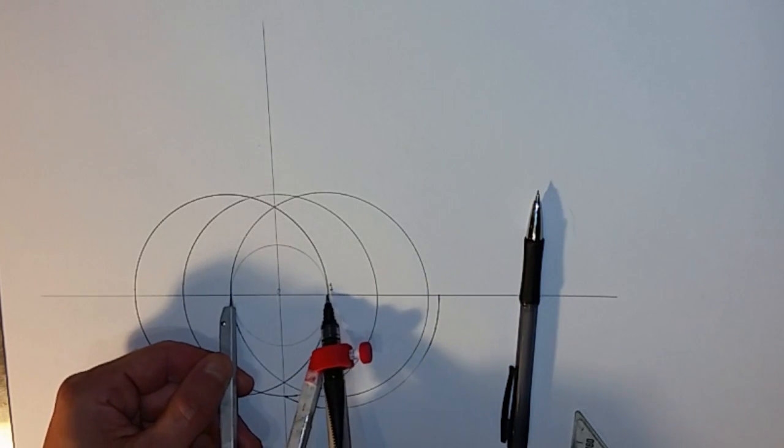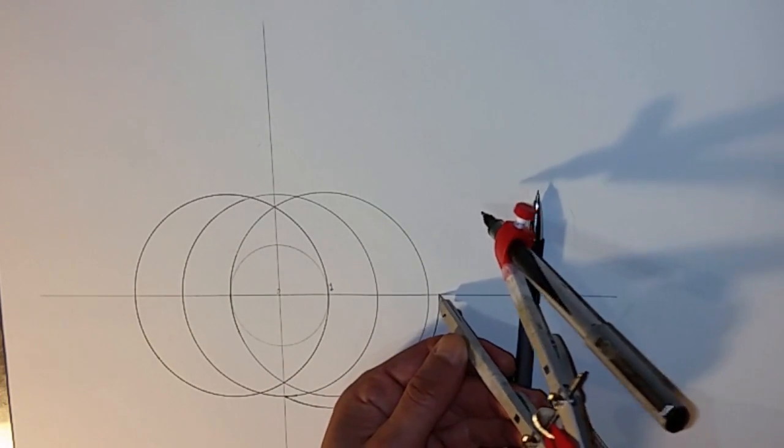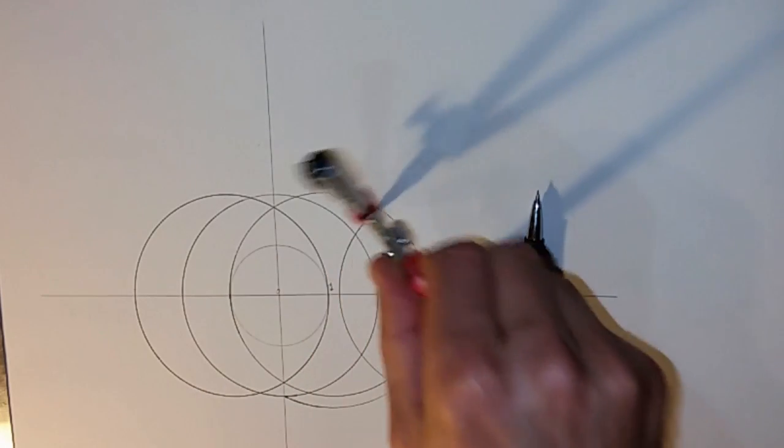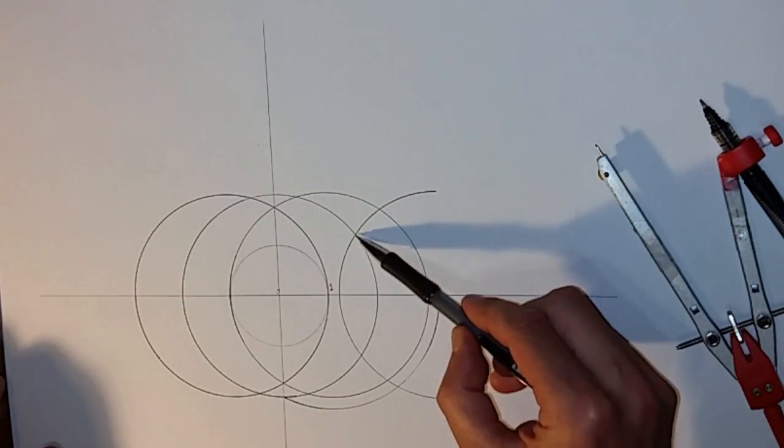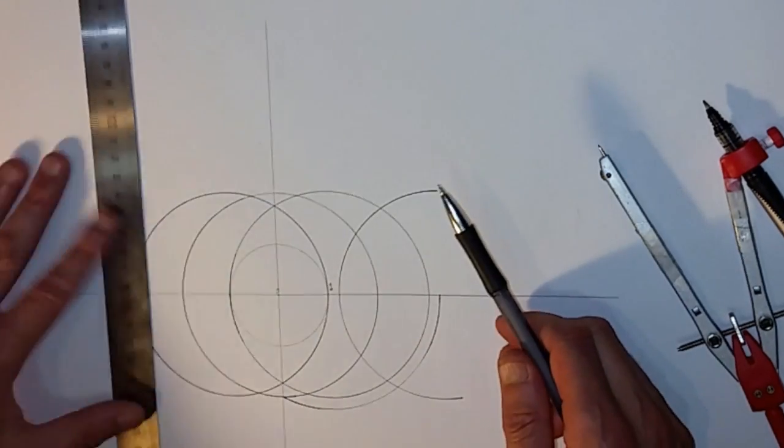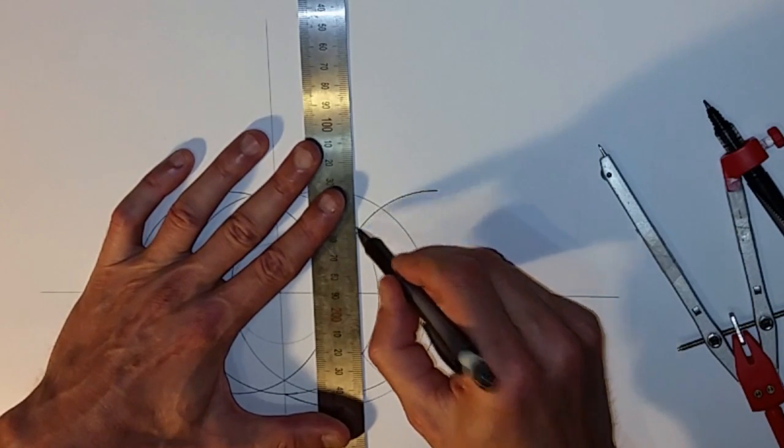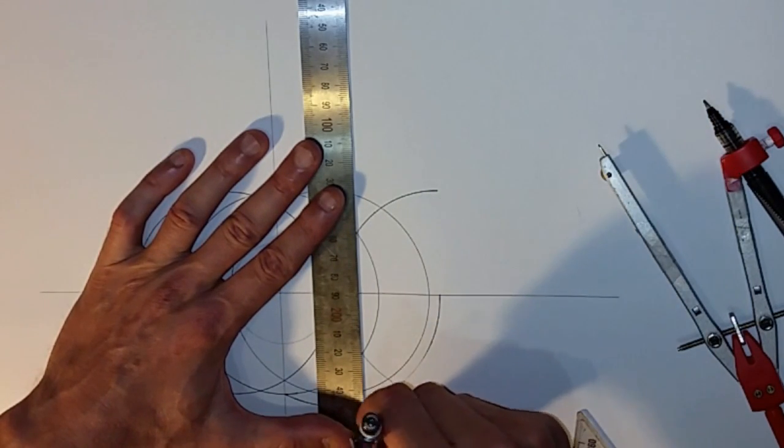Now we go back to two, which is the diameter of the original circle. On the end here we draw a half circle, and now we've bisected this line.